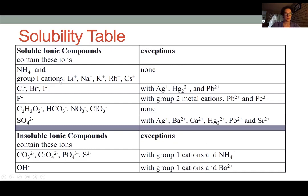What this table is saying is that these small 1+ cations like ammonium, lithium, sodium, potassium, rubidium, and cesium are always going to form a soluble ionic salt with no exceptions.